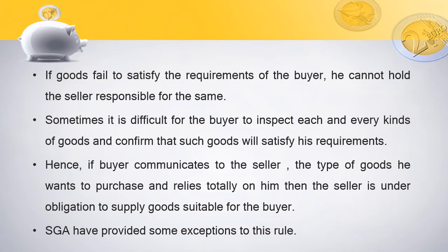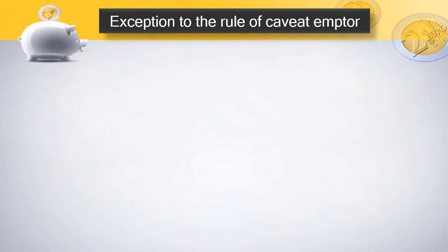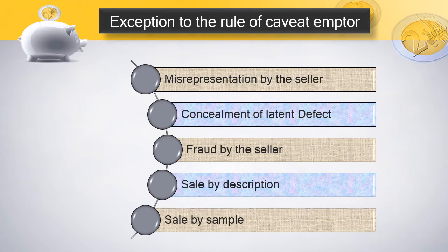The Sale of Goods Act has provided some exceptions to the rule of the Doctrine of Caveat Emptor. Exception 1: Misrepresentation by the seller. If the seller has misrepresentingly sold some goods to the buyer and the buyer relies on the misrepresentation made by the seller, in that case we cannot hold the buyer responsible if such goods are not as per his requirements. If the seller has given any misinformation or misleading information about the goods, this exception applies.